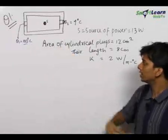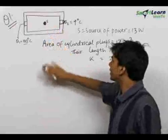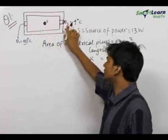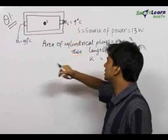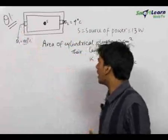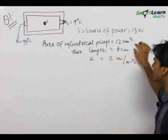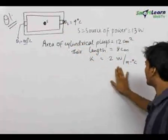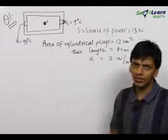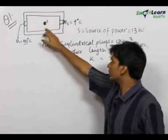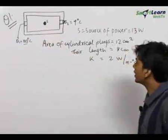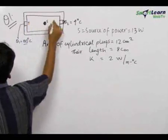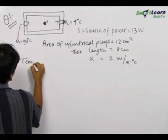In this question, we have a chamber with inner walls and outer walls. The only heat exchange occurs through these two cylindrical plugs. The outer surface of this cylindrical plug is maintained at 4 degrees Celsius and the other at 100 degrees Celsius. The area of cross section of the cylindrical plugs and the length are given, and the thermal conductivity of the material is given. There is a source inside the chamber of power 13 watts. We need to find out the temperature of the inner walls at equilibrium.